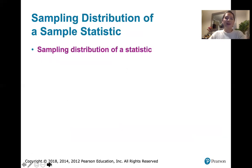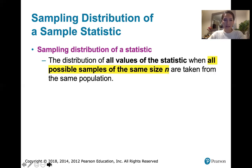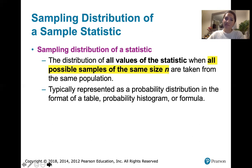This is called the sampling distribution of a statistic. It is the distribution of all values of the statistic when all possible samples of the same size n are taken from the same population. Typically, this is represented as a probability distribution in the form of a table, a probability histogram, or a formula.